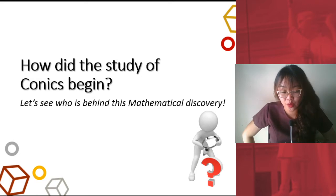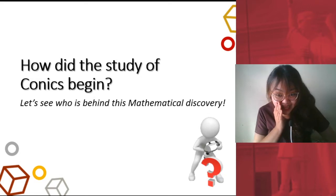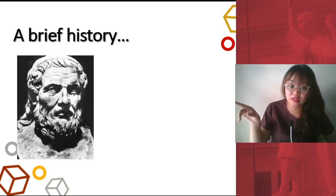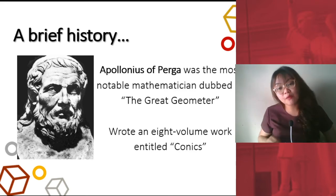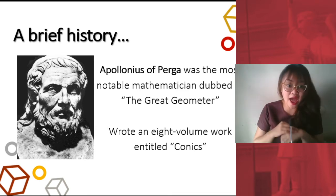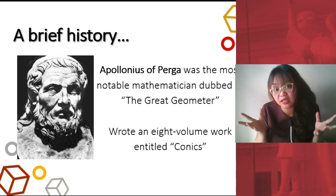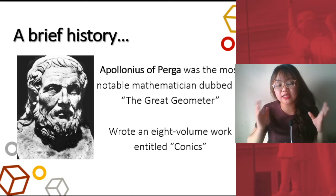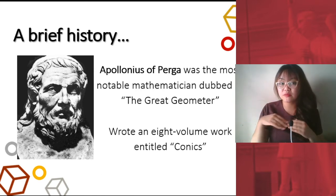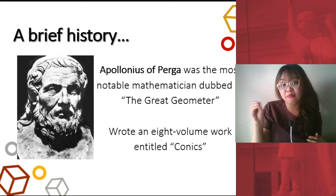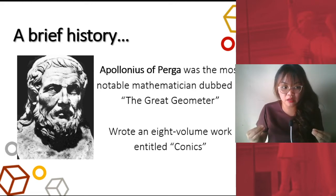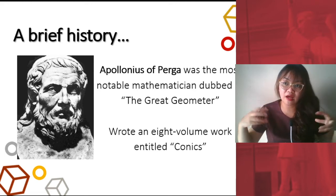So, let's begin with Conics. How did the study of Conics begin? Let's see who's behind this mathematical discovery. A brief history. This guy here, this is Apollonius of Perga. He is one of the most notable mathematicians. He's even dubbed as the Great Geometer. Why is he great? Well, he was able to write an eight-volume work, which is entitled Conics. And out of those eight volumes of work, we will just be tackling about the basics. The foundation of what he was able to write about. And then, we would incorporate that with modern mathematics.